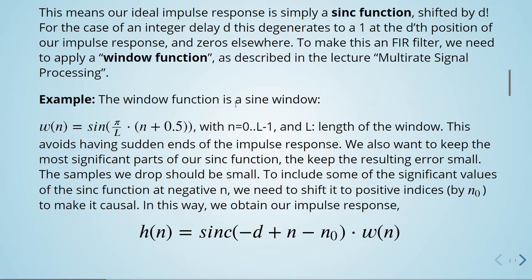So what we are doing is that this avoids having sudden ends of the impulse response. We also want to keep the most significant part of our sinc function to keep the resulting error small. So the samples that we will drop out should also be small.